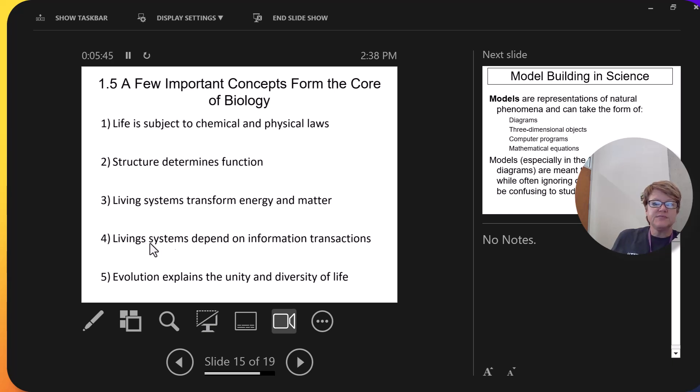Living systems depend on information transactions. That is a really weird way of talking about genetics and inheritance, information transactions. So, we'll get to that in the last part of this course. And number five, evolution explains the unity and diversity of life, in that over time, organisms get mutations and become different, but we all originated from the same one or a few cells. So, there are some things about all organisms that are the same. So, unity and diversity.